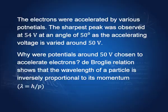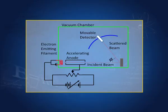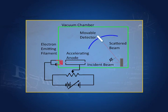The electrons were accelerated by various potentials. The variable potential difference was changed so that electrons are accelerated to different potentials. The sharpest peak was observed at 54 volts at an angle of 50 degrees as the accelerating voltage was varied around 50 volts. A very sharp peak was detected by the detector at an angle of 50 degrees from the incident beam — that is the observation.